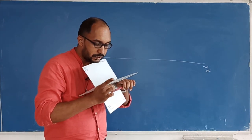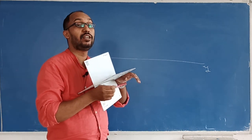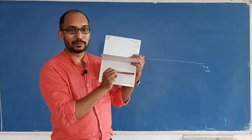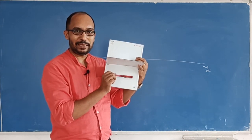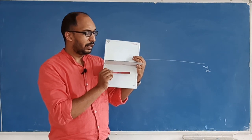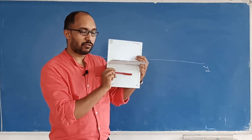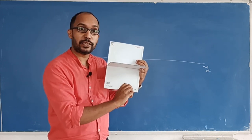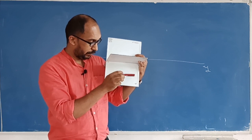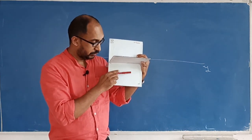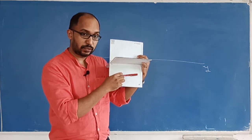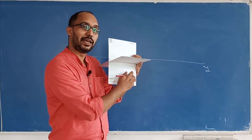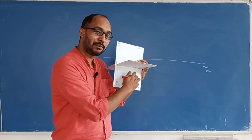Point C is 40 millimeters below HP, and point D is also 40 millimeters below HP. Since the line is parallel to HP, both endpoints are at the same height. Point C is 20 millimeters behind VP, and point D is also 20 millimeters behind VP.